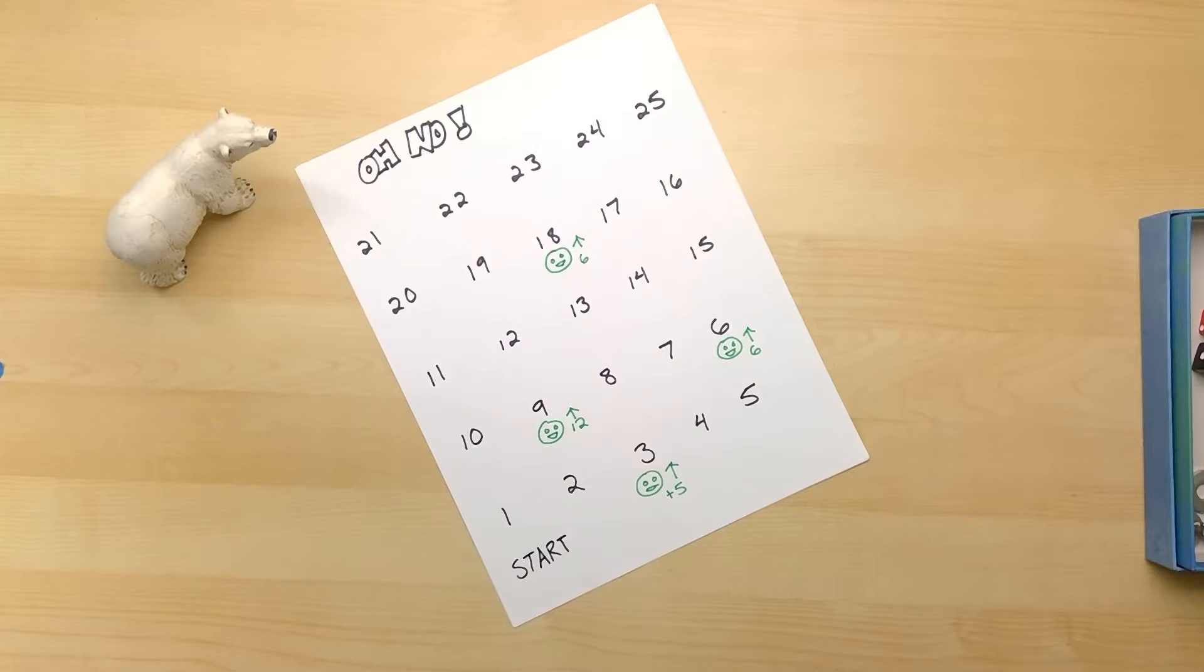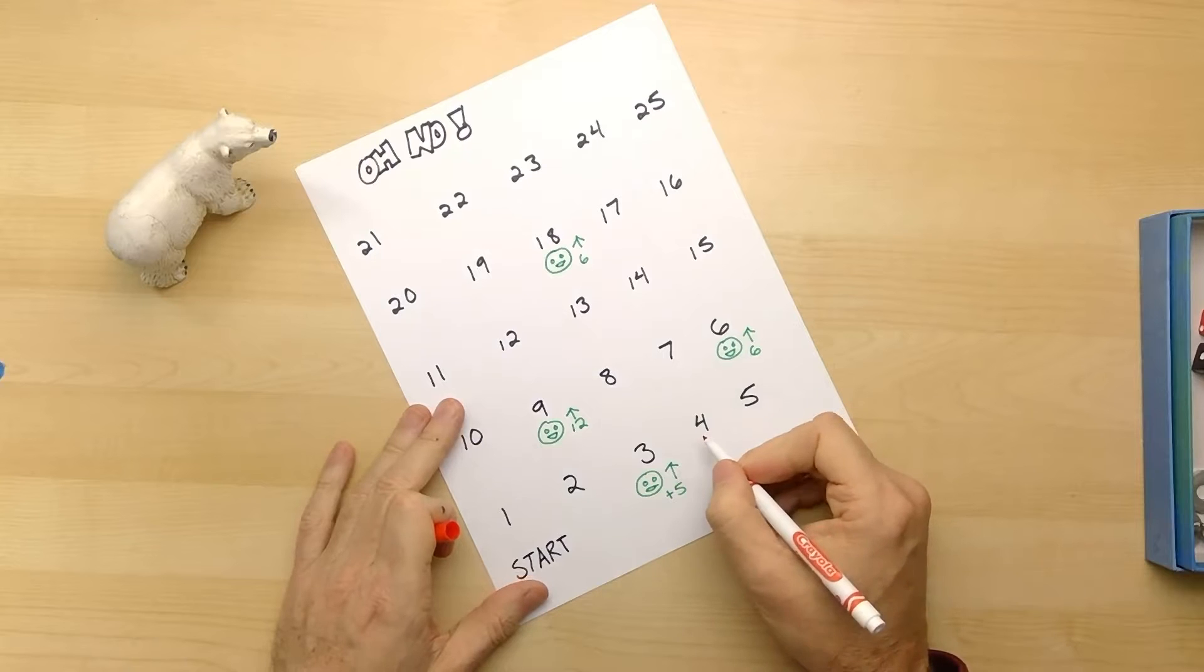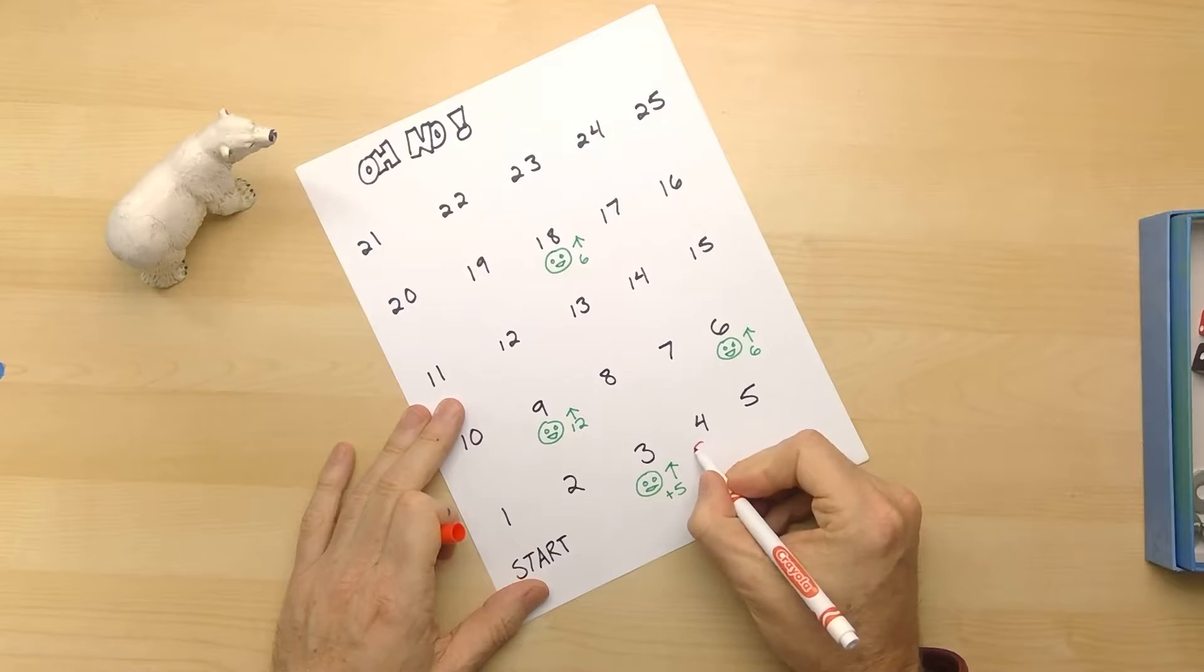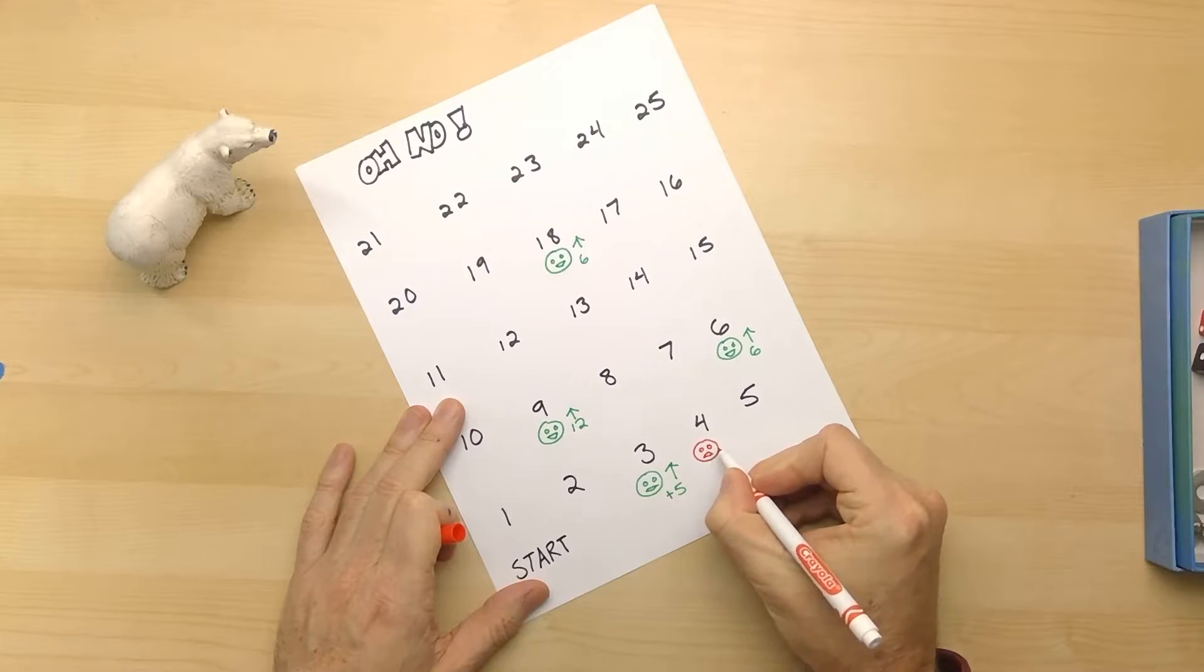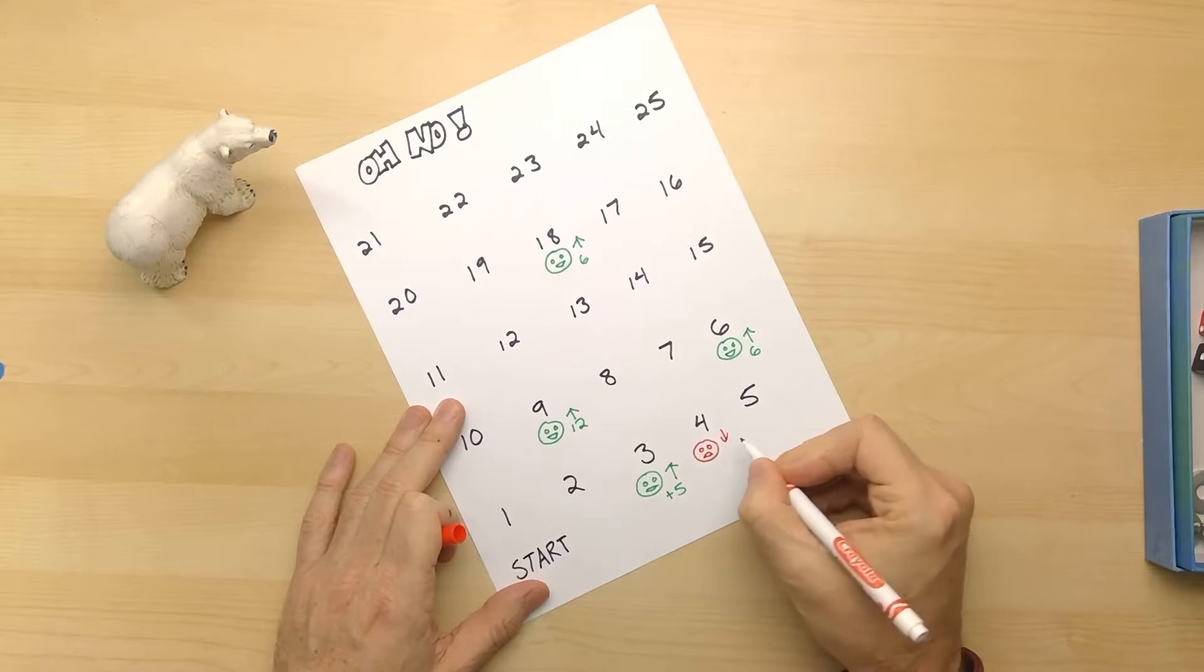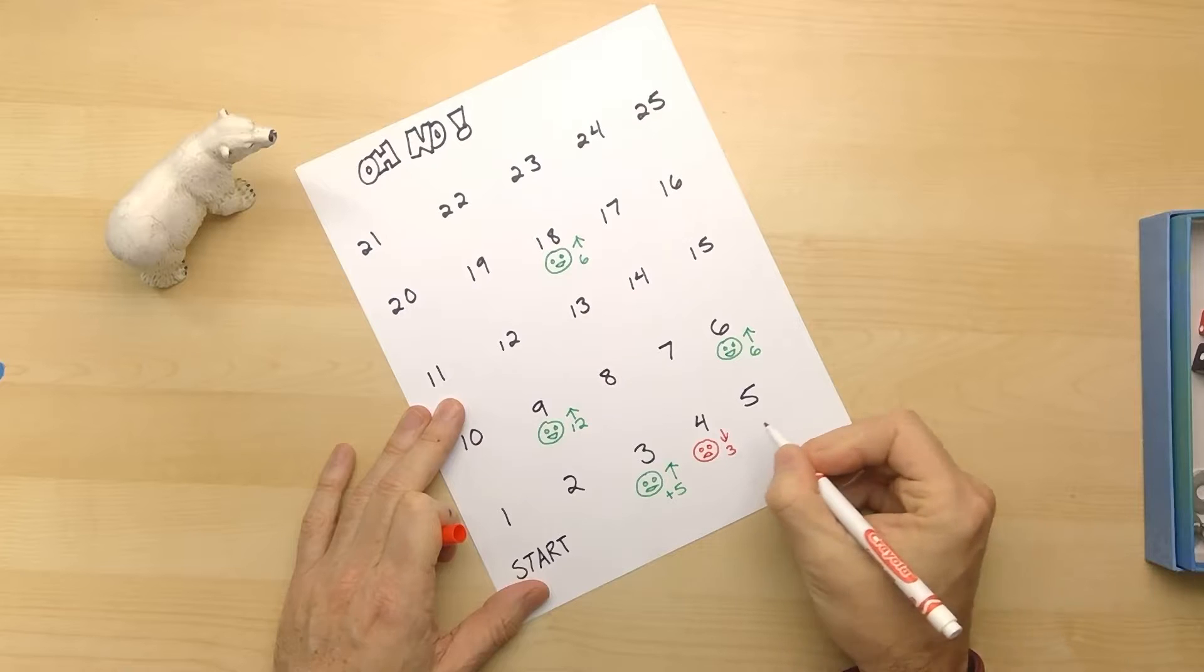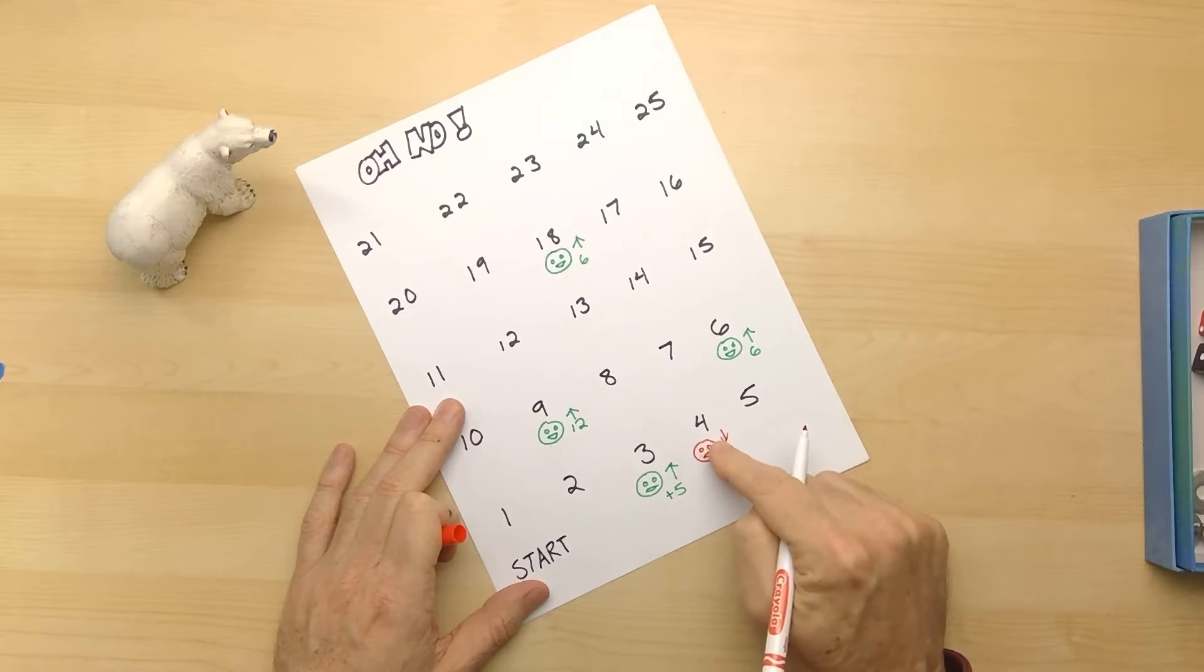What happens if we put some not happy places up here? So what happens if we get to the four and we have to go back by three? So one, four - one, two, three. We get back all the way to the one.